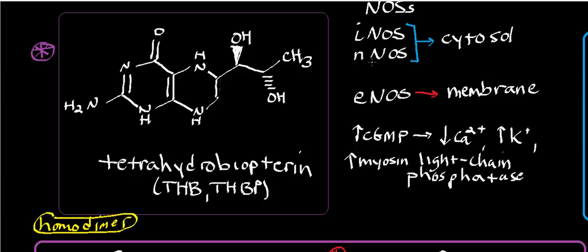Neuronal nitric oxide synthase is used by usually postsynaptic neurons to communicate with presynaptic neurons. There's a process known as long-term potentiation — a fancy way of saying learning. To learn something, you need glutamate to bind to an NMDA receptor. When the postsynaptic neuron releases nitric oxide, it goes back to the presynaptic neuron, diffuses into the cell, and causes the release of more glutamate, therefore facilitating more long-term potentiation.